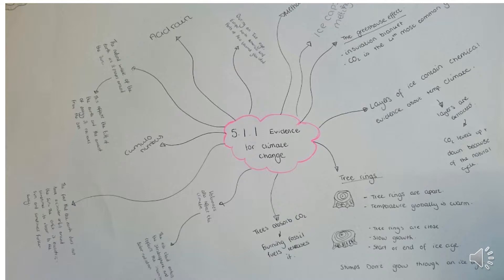You also need an understanding about ice cores and what evidence they show. Ice cores are massive cylinders withdrawn from Arctic, Antarctic and Greenland ice sheets, and they contain bits of atmospheric salt and dust, which can show when industrial revolutions have taken place, and also small tiny bubbles of gas.